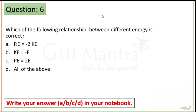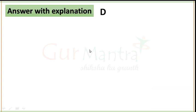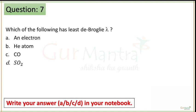Time up guys. You have to tell the correct relationship between different energies. As you can see, options A, B, and C are all correct — all are correct relationships between different energies. So the answer is option D. Next question is question number 7 — you have to calculate the least de Broglie wavelength, your time starts now.